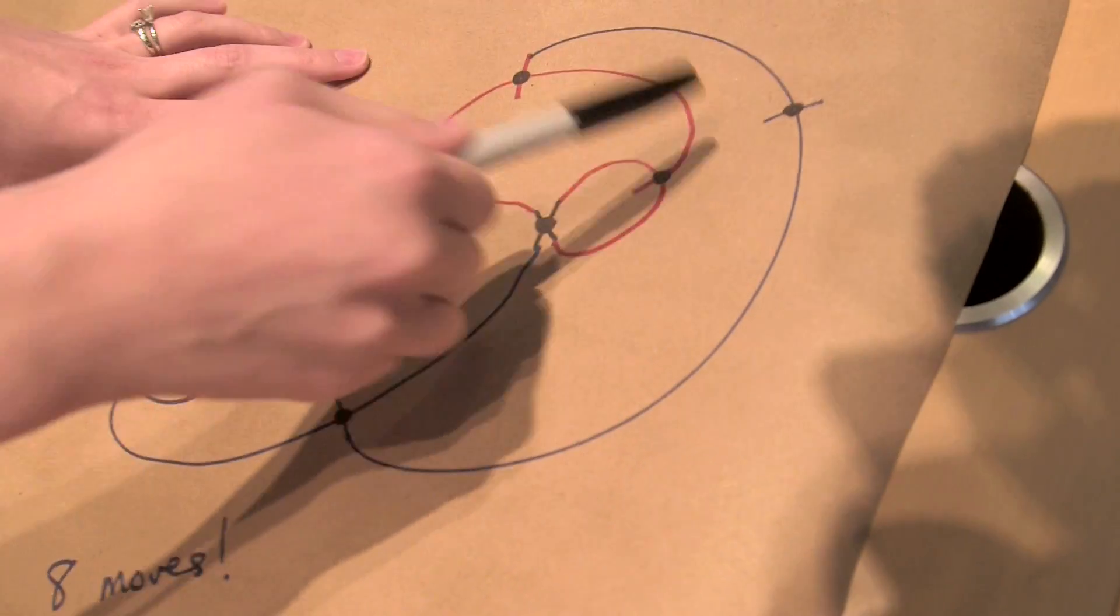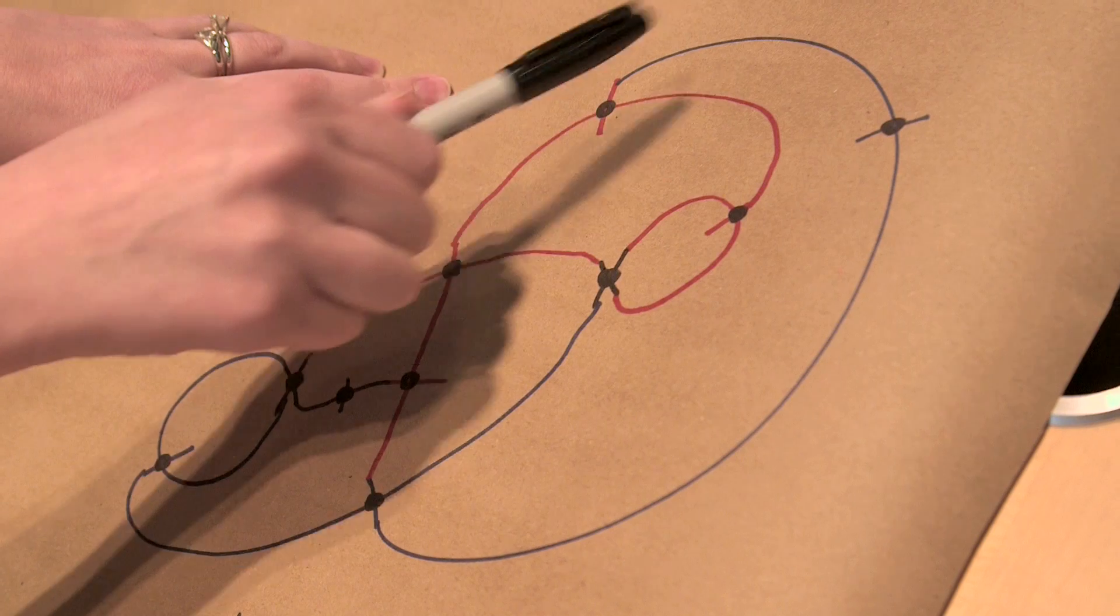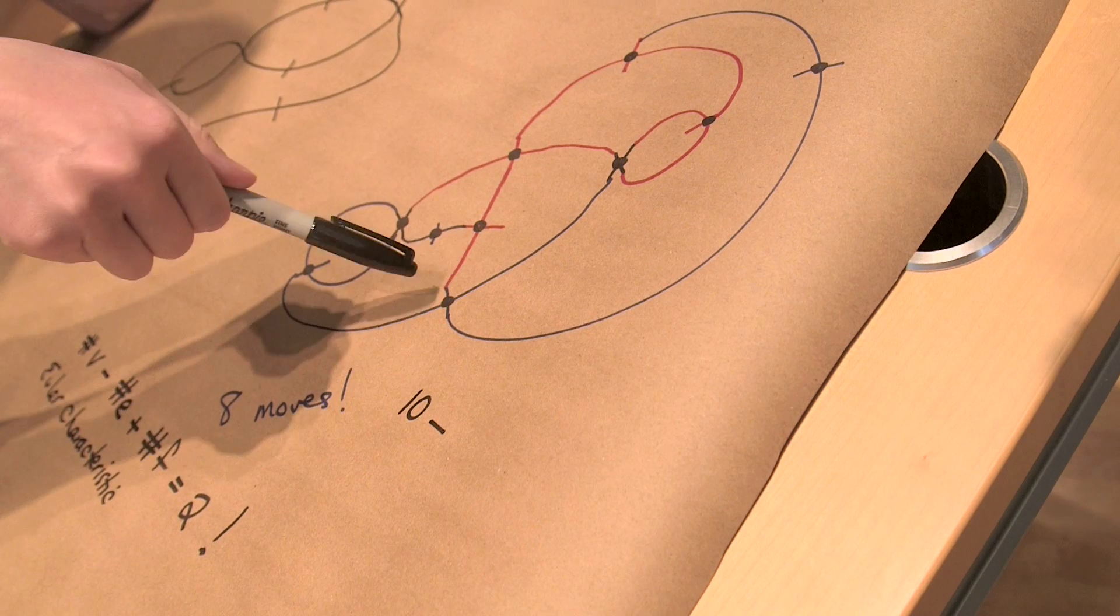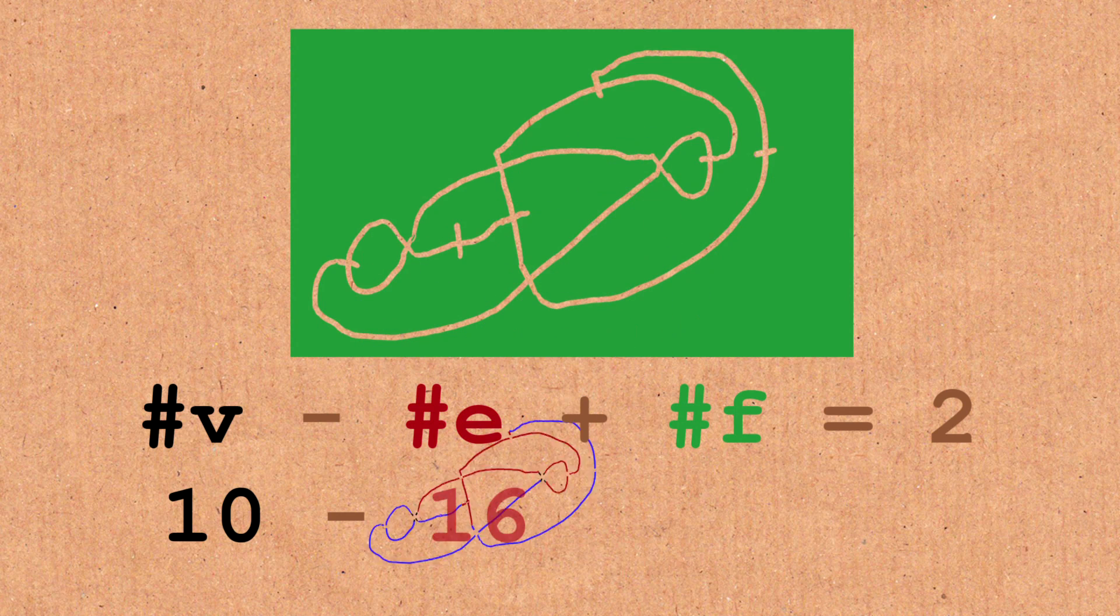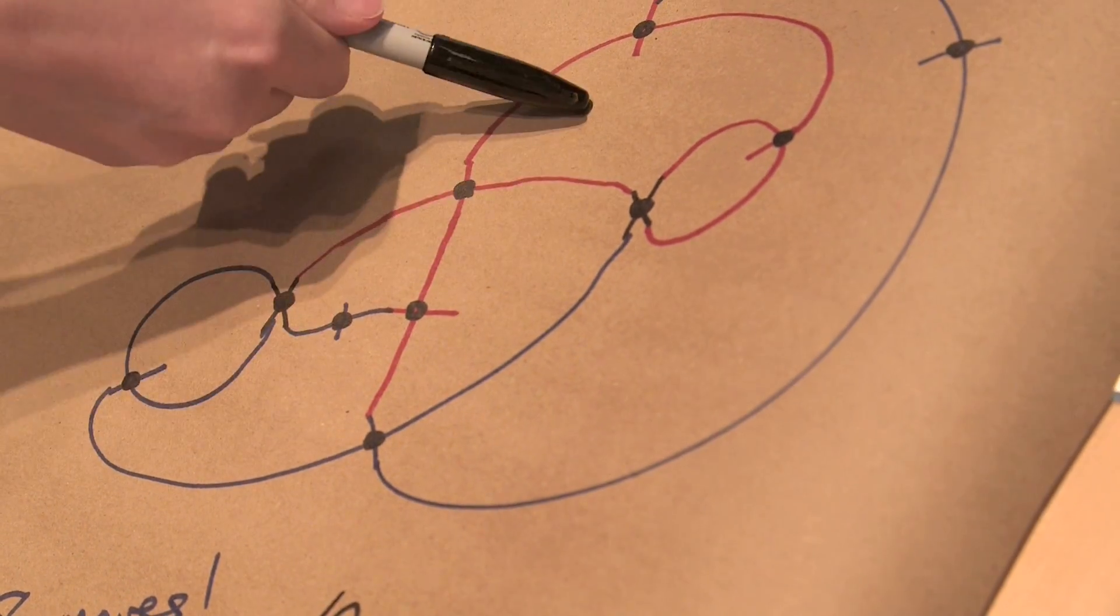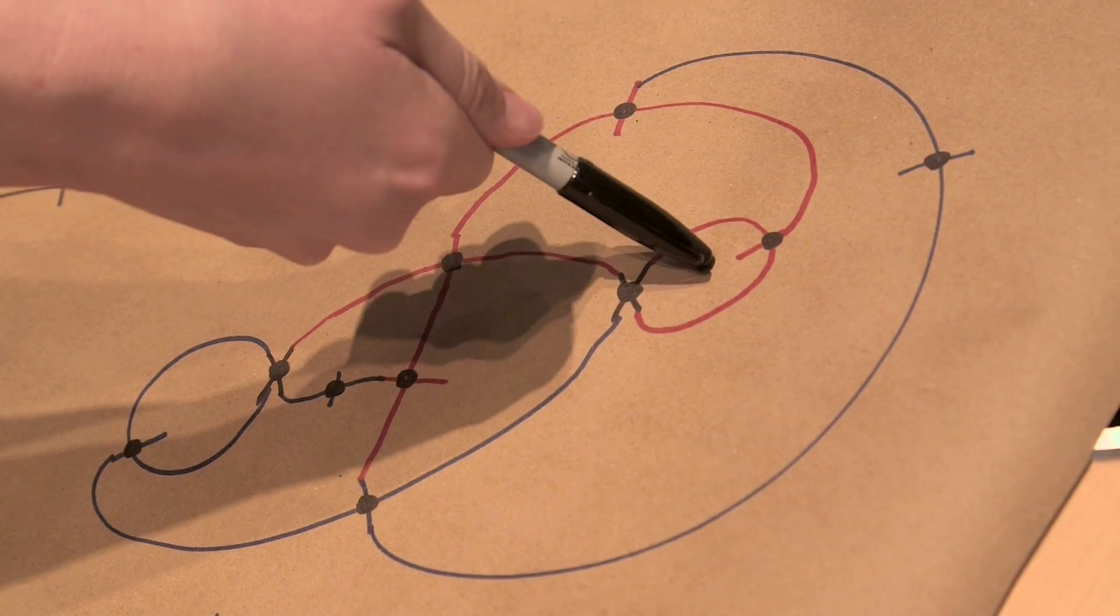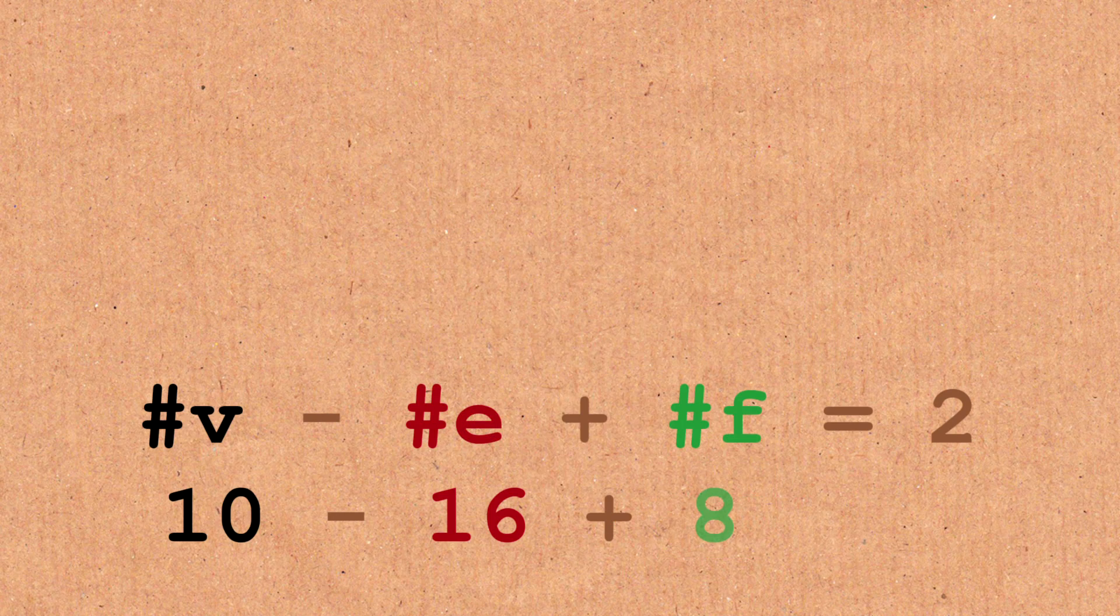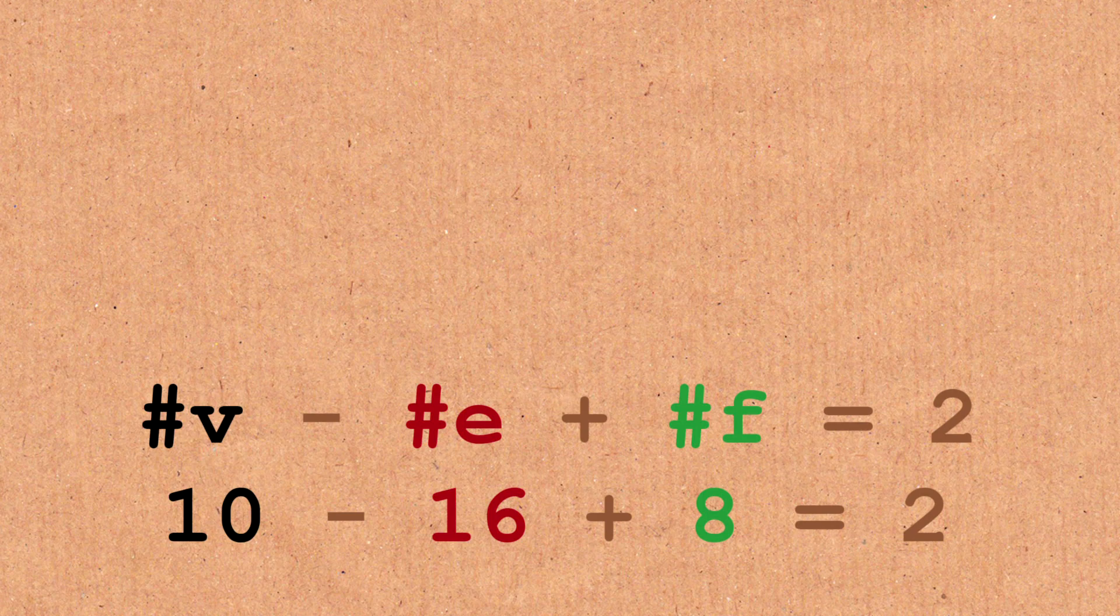So maybe we should have done this one as an example. So in this example for instance if we count vertices. There are one, two, three, four, five, six, seven, eight, nine, ten vertices. And I'm supposed to subtract the number of edges. There are one, two, three, four, five, six, seven, eight, nine, ten, fifteen, sixteen edges. And I'm supposed to add the number of faces. So these faces are their regions. So it's one, two, three, four, five, six, seven. But then I also count everything outside the graph as a region. So eight. And then we get two like we were supposed to.